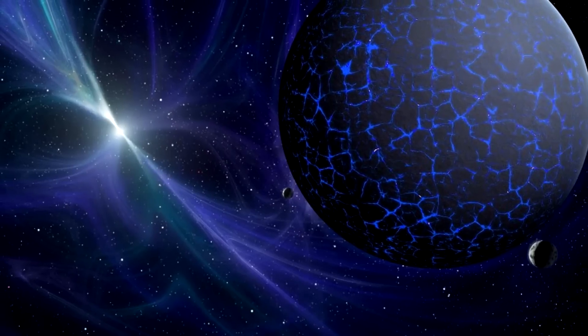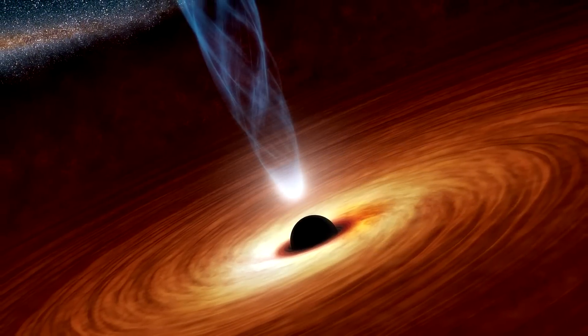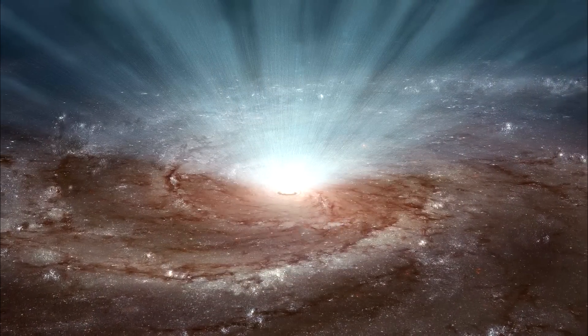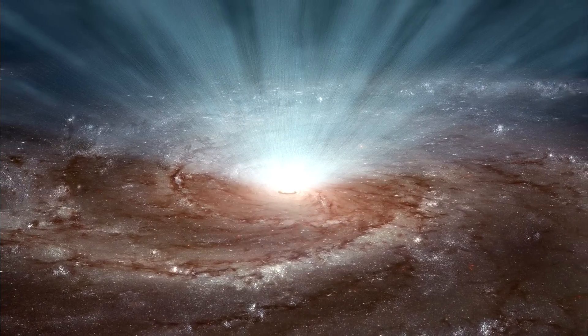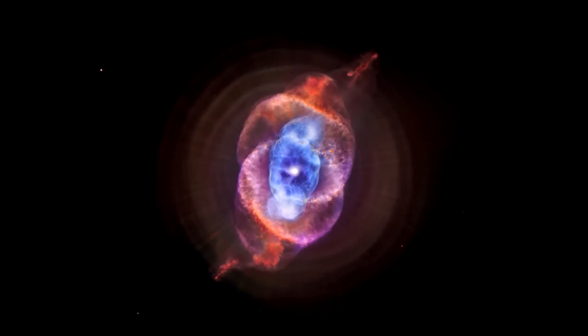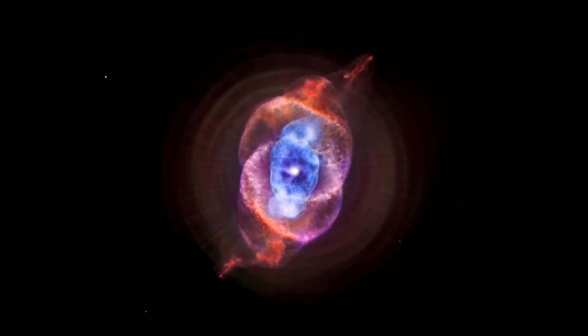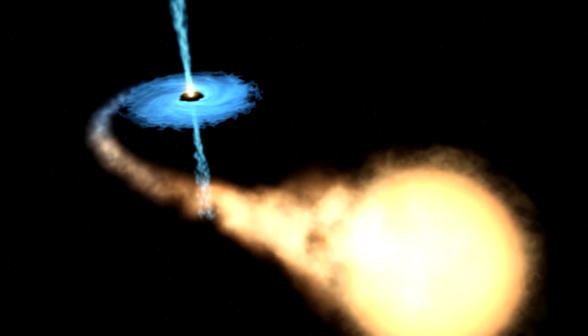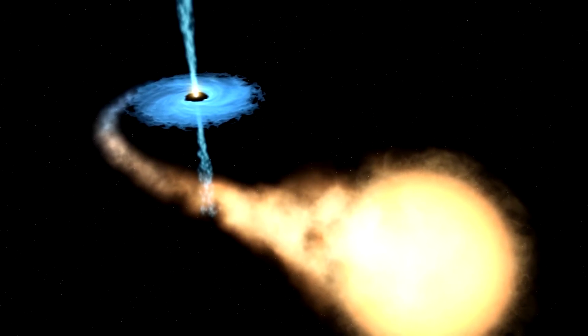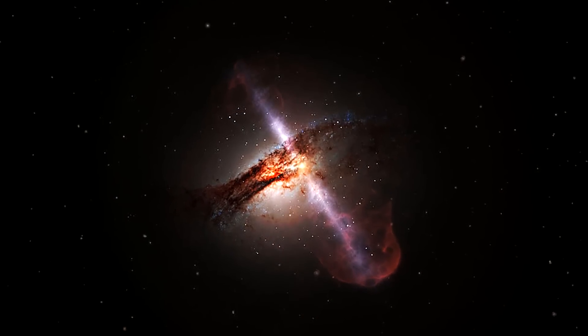When a star enters its supernova stage, it will either become a neutron star, or if it's massive enough, will become a black hole. Black holes are so dense that the gravitational pull does not allow anything to escape the event horizon, not even light. And there are two types of black holes.